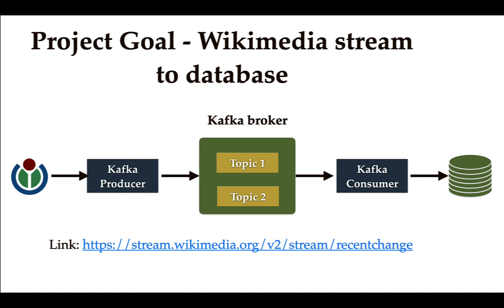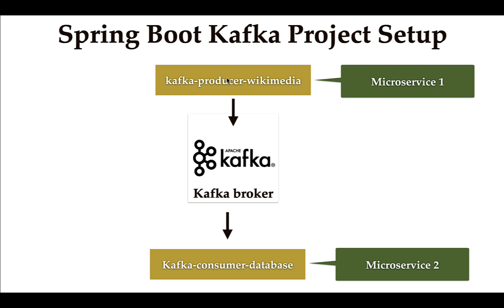In this real-world project we are going to create two projects, and you can think of them as microservices. First, we create a Kafka producer Wikimedia project, which acts as a Kafka producer — it reads real-time Wikimedia stream data and writes it to the Kafka broker. Next, we create a Kafka consumer database project, which consumes real-time stream data from the Kafka broker and writes it to the database.